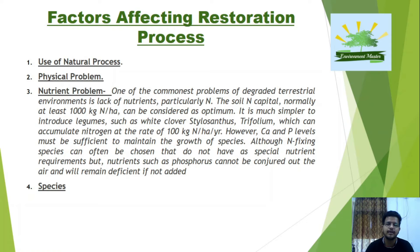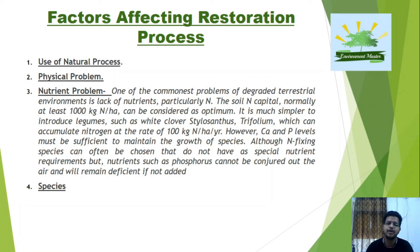The third factor is nutrient problems — the desirable nutrient content is approximately 1,000 kg of nitrate per hectare of area. Due to lack of leguminous plants or nitrogen-fixing bacteria, the quantity can be very low. It is much simpler to introduce legumes such as Clover, Tylanthus, or Trifolium, which can accumulate nitrogen at a rate of 100 kg of nitrate-nitrogen per hectare per year.